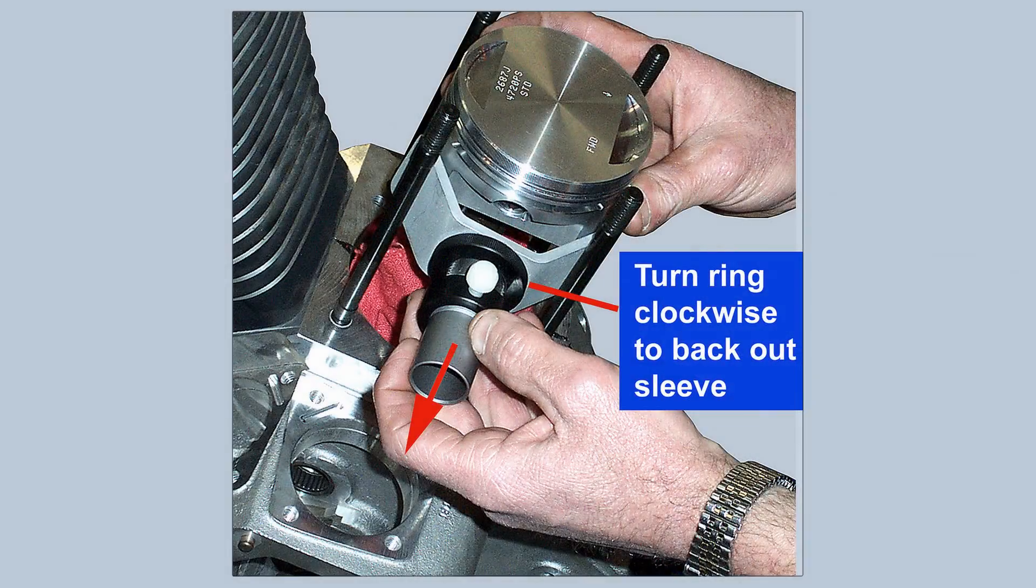Then with the piston mated to the con rod, rotate the depth adjuster ring to back out the sleeve so the nose of the sleeve just clears the piston when you slide the C-Clipper down toward the block.